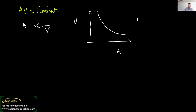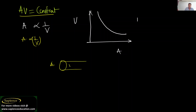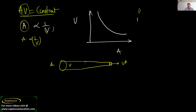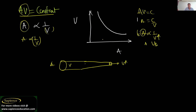Since A·V is constant, we can write that area is inversely proportional to velocity. It means that if a pipe's cross-sectional area reduces, velocity will increase, because area and velocity are inversely proportional. If A·V is constant, then A equals constant divided by V — area is inversely proportional to velocity. If velocity increases, area decreases; if velocity decreases, area increases.